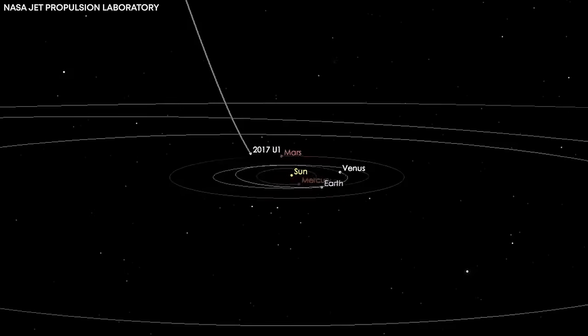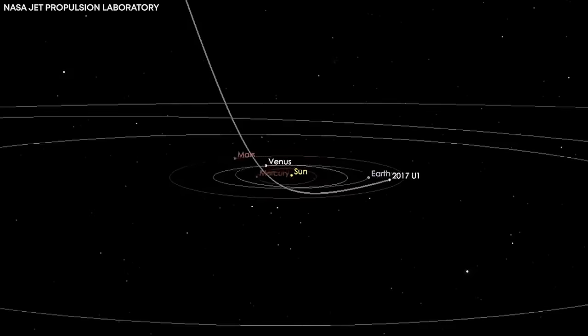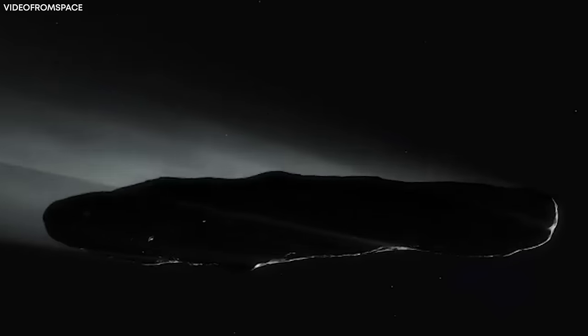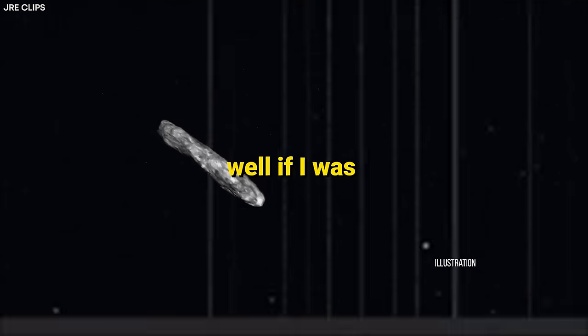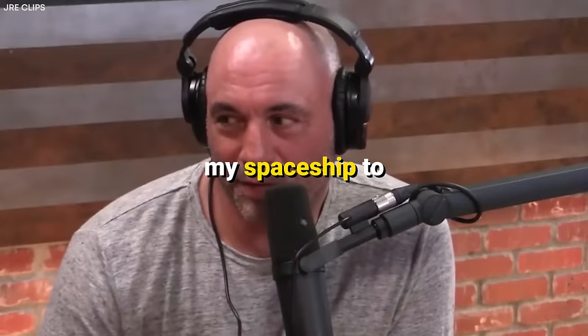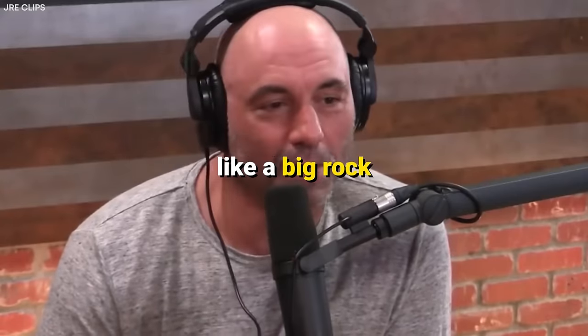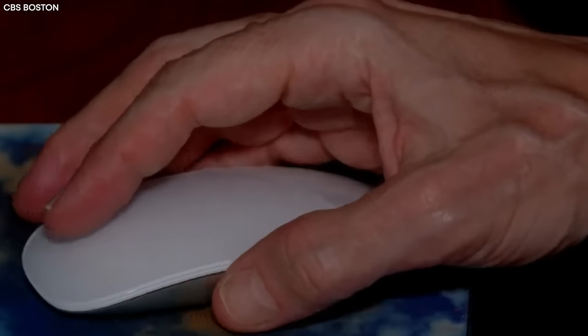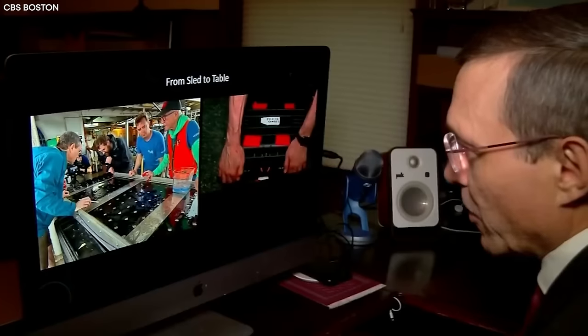When Oumuamua was first observed in 2017, it captured the attention of many, including Joe Rogan. Well, if I was going to mask my spaceship to fly through the galaxy, I would definitely make it look like a big rock. Yeah, like a big asteroid. In the buzz of the moment, Rogan invited the renowned Israeli-American theoretical physicist Avi Loeb to come break down things for his audience.